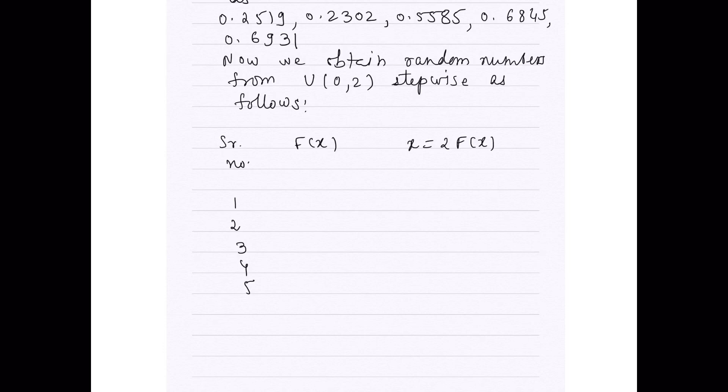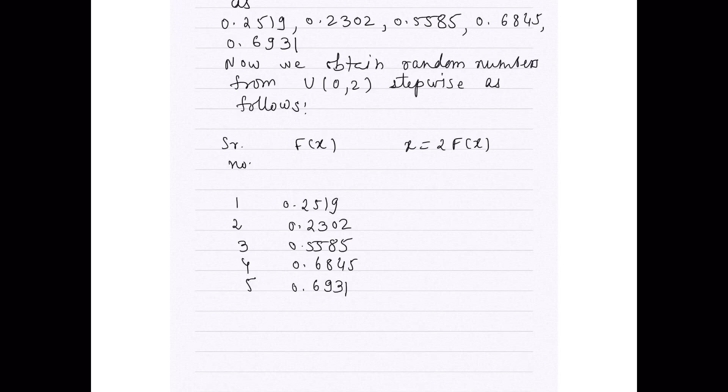First F(x) value is 0.2519, then 0.2302, 0.5585, 0.6845, and the last one is 0.6931. Now, let us obtain answers for x. The formula which we have derived is x equals 2 into F(x). So, first answer is for x, 2 into 0.2519, that is 0.5038. Second x value is 2 into 0.2302, that is 0.4624.